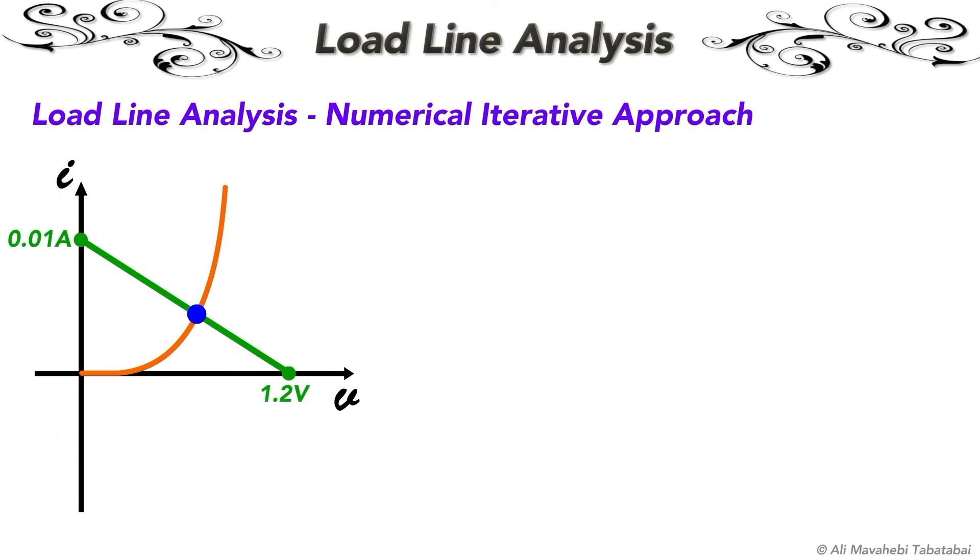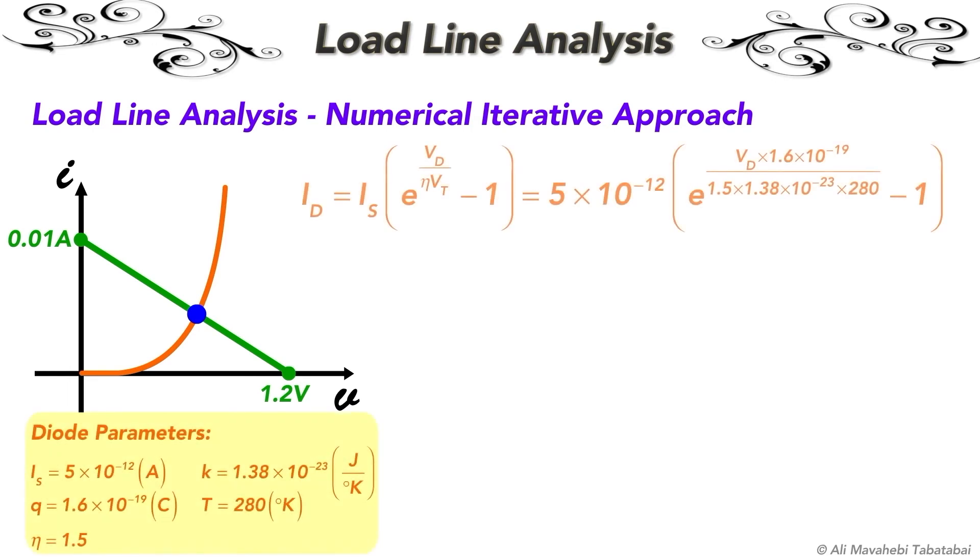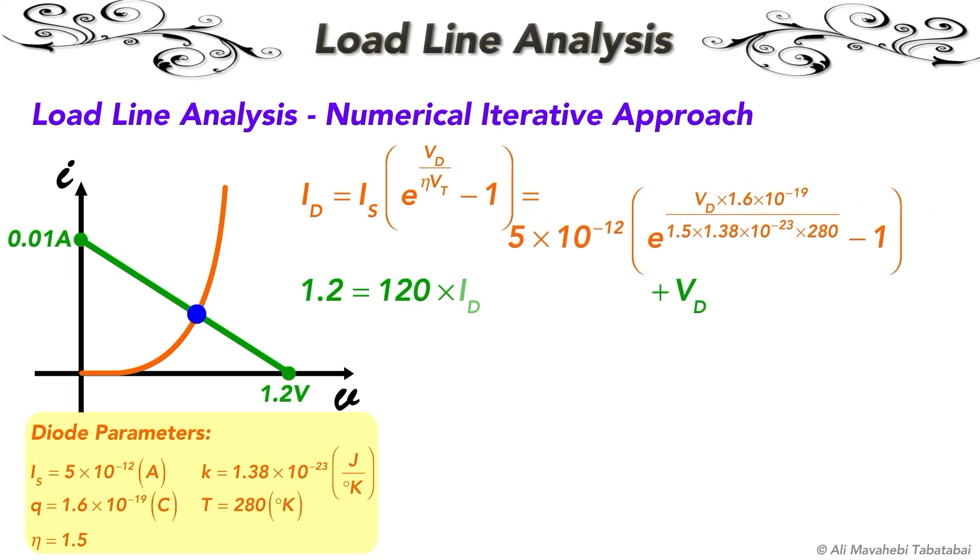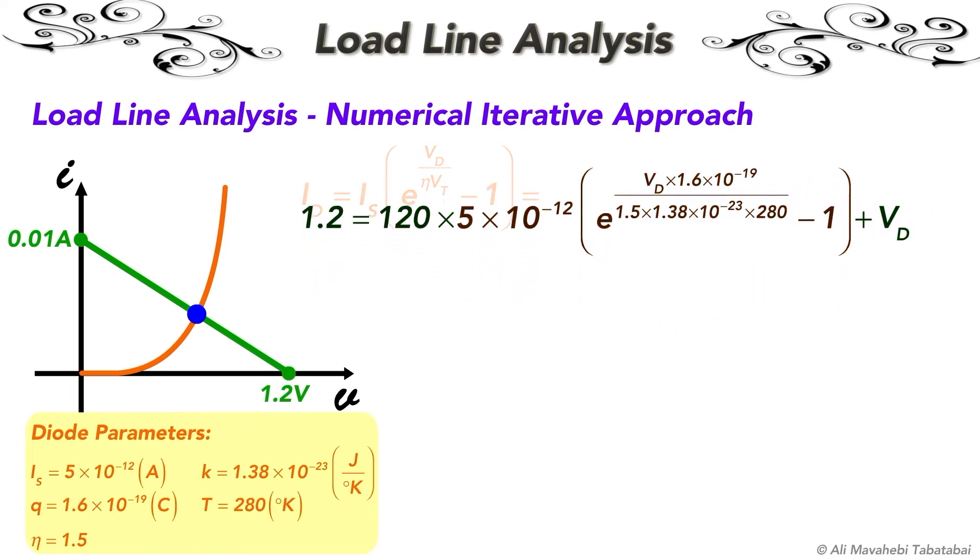To get the most accurate result, we have to solve the two simultaneous equations. One equation is the diode's characteristics equation, and the other one is defined by applying Kirchhoff's voltage law around the closed loop. If the diode's characteristics equation is replaced with the diode current in KVL equation, the result will be a transcendental equation.